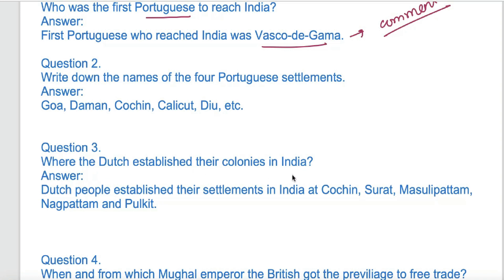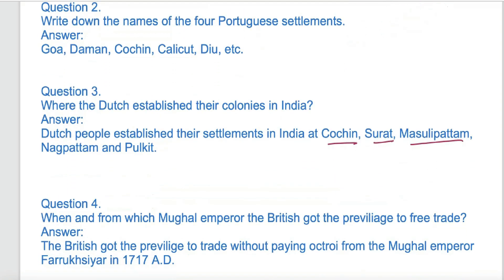Where did the Dutch establish their colonies in India? The Dutch had their own control over Cochin, Surat, Masulipatnam, Nagapatnam, and Pulkat. Please remember these names.